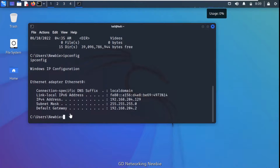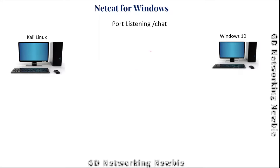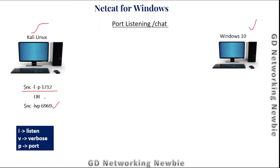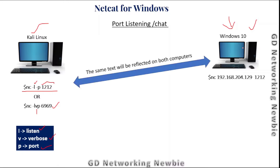Now let's look at the port listening use of Netcat, which can also function as a simple chat. On Kali Linux, we use the command: nc -l -v -p [port], where -l means listen, -v is verbose mode, and -p specifies the port. On Windows 10, we connect to that Kali machine using the netcat command. Whatever text is typed on one machine will be reflected on the other — like a chat.